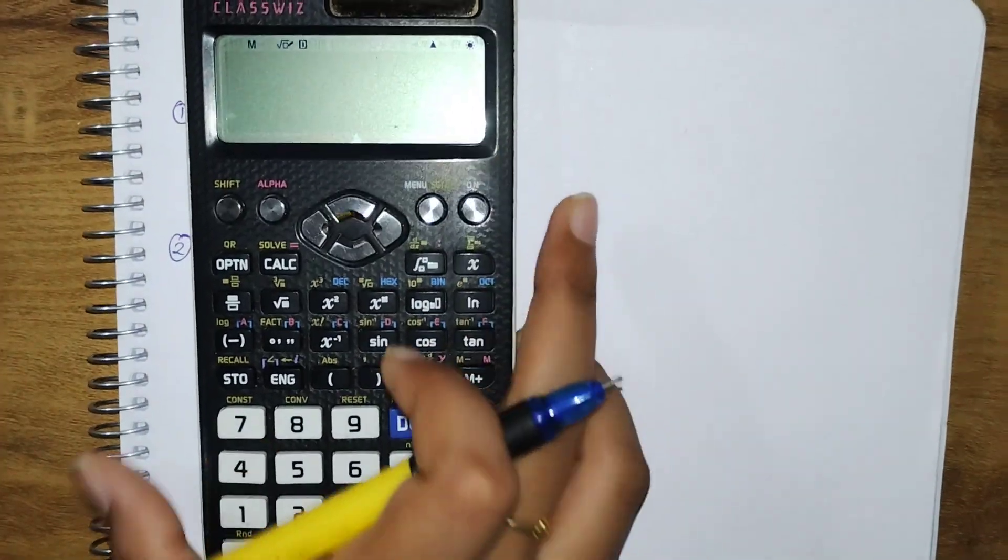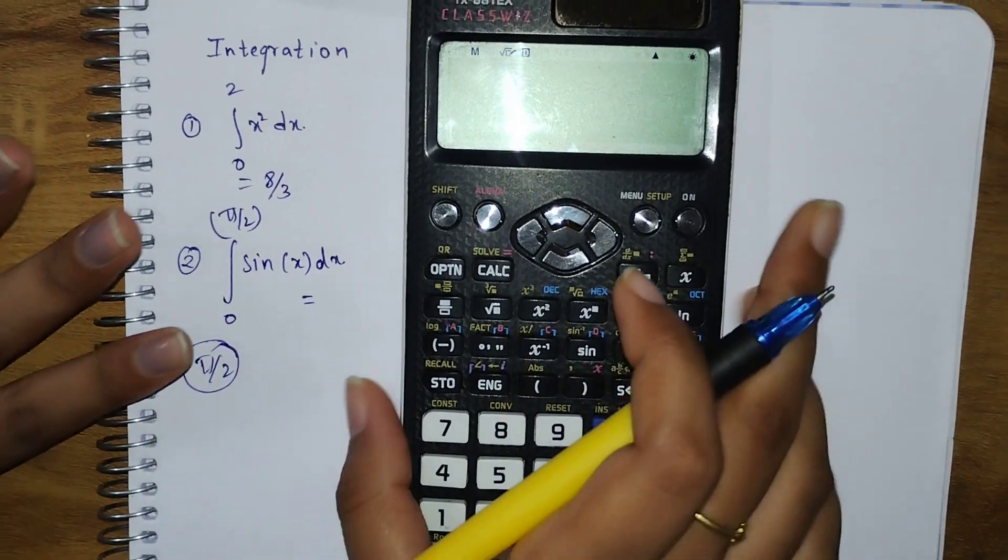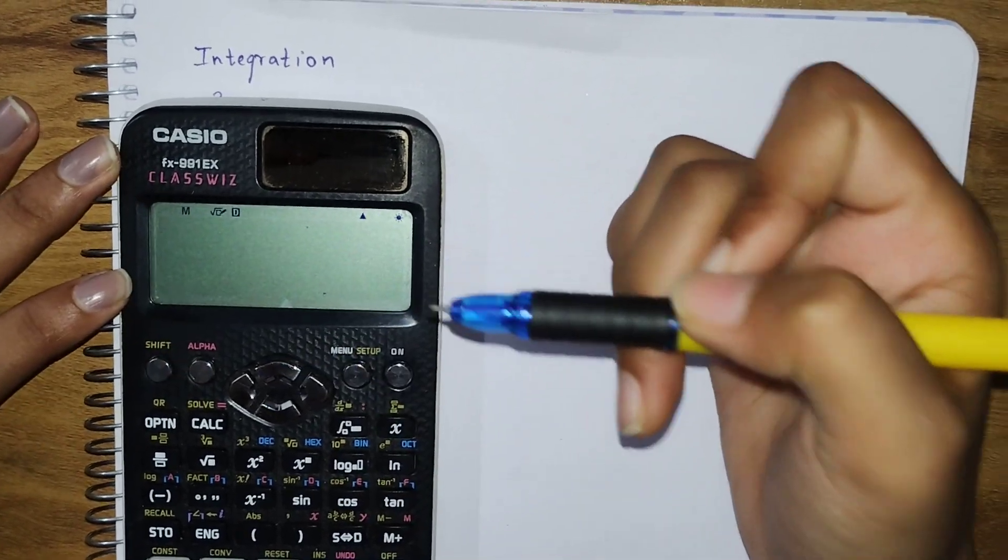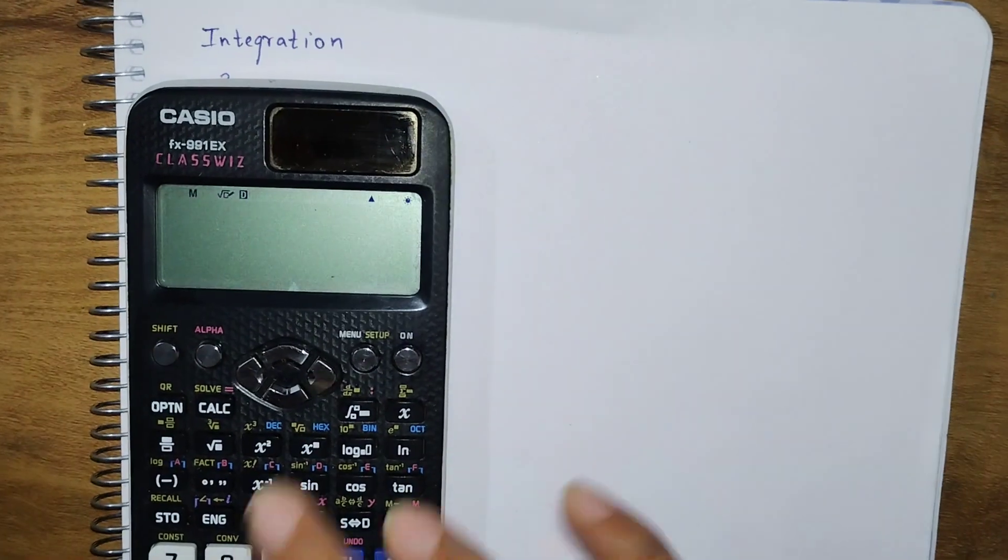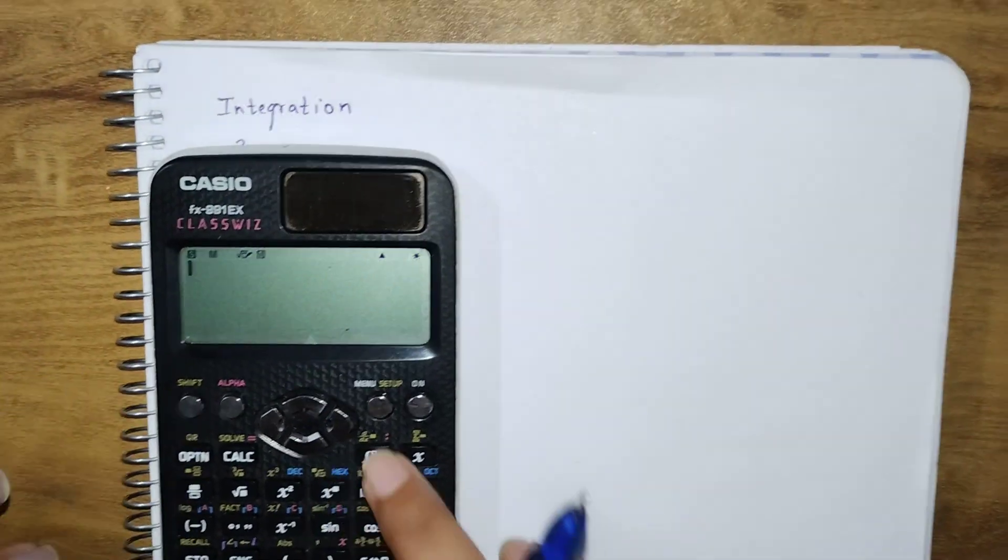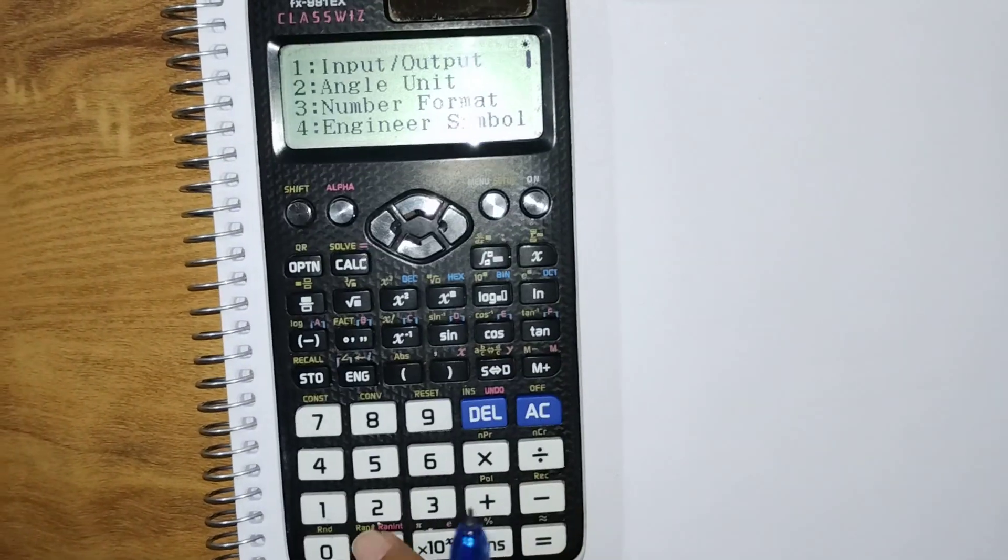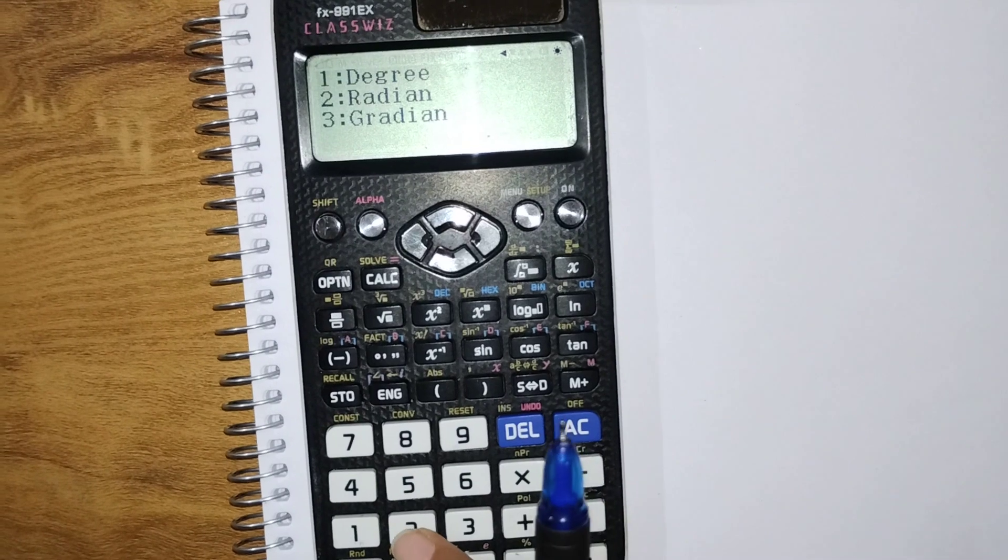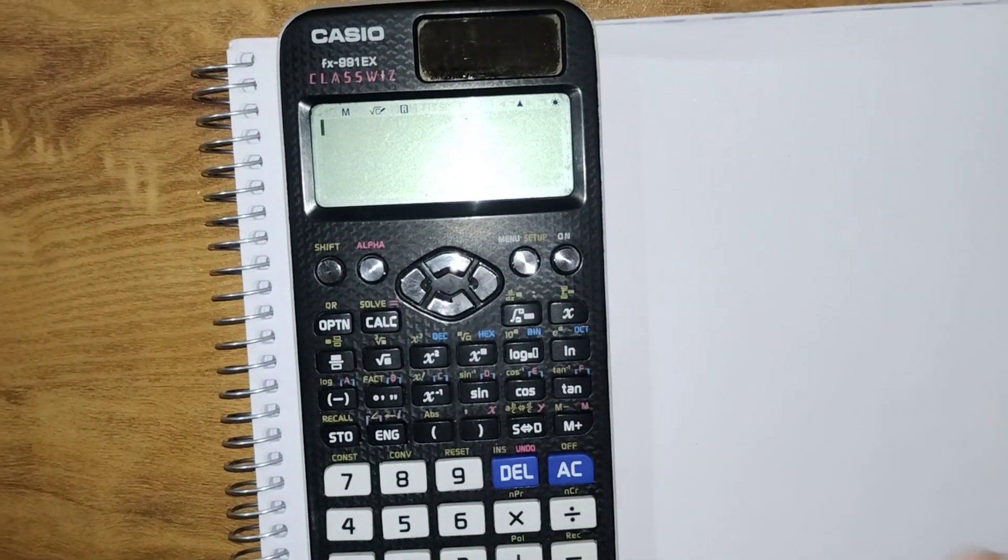The important thing is this is π/2, so it should be converted to radian form. Our current setting is in degrees, so first we need to convert it to radians, then enter our values. Go to shift, menu, setup. Here you can see angle unit, that's option 2. Go to radian, option 2. You can see the R symbol here. That's done.